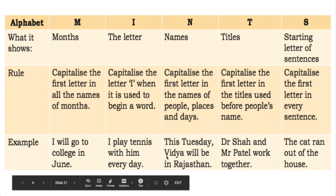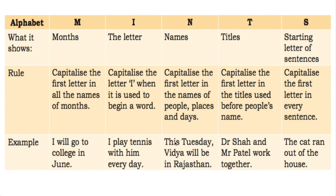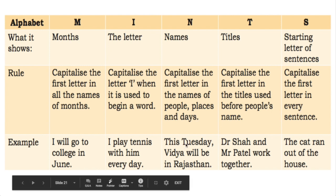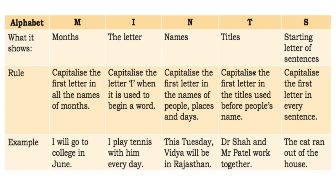N is for Names. For example, 'Vidya is in Rajasthan.' V is the name of a person, so its first letter is capital. Rajasthan is the name of a place, so R is capital. Whatever names appear — whether people or places — their first letter will be capital. T is for Titles. Capitalize the first letter in titles used before people's names.